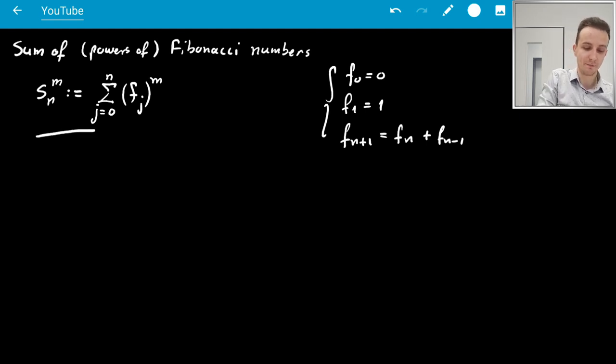I've written here the sum of the m-th powers of Fibonacci numbers, for m a natural number. And here we'll just do for m equals 1 and m equals 2. The Fibonacci numbers, of course, satisfy these initial conditions and recurrence relation.